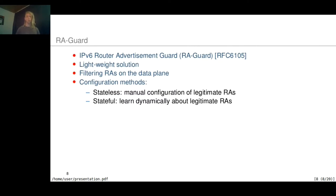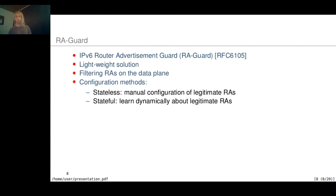Therefore, we chose the IPv6 Router Advertisement Guard, or RA-GUARD, according to RFC 6105. Compared to the SEND protocol, this is a lightweight solution. It is already implemented in some proprietary switches on the market, and it is based on filtering router advertisement packets on the data plane — working basically like a packet-based firewall.